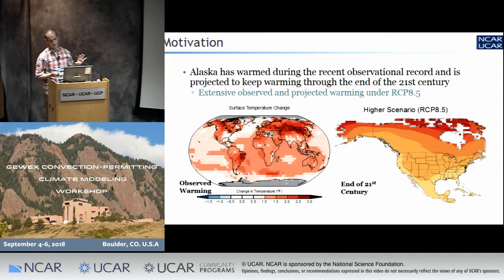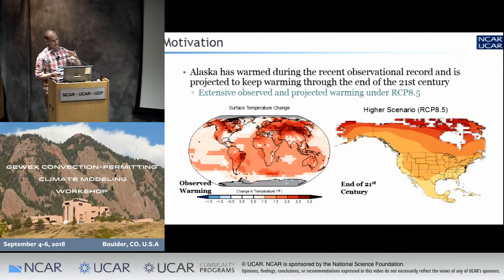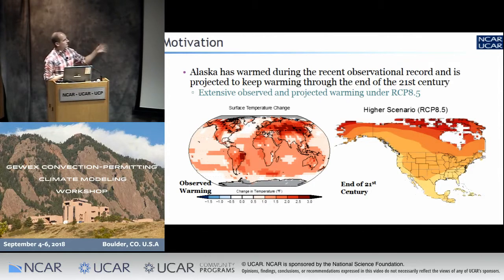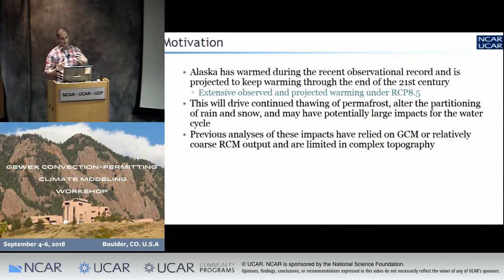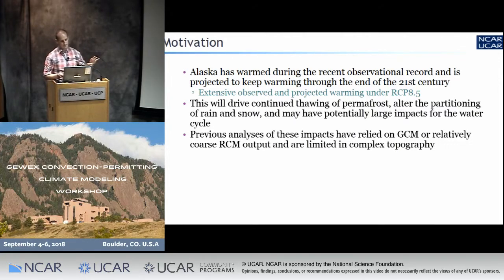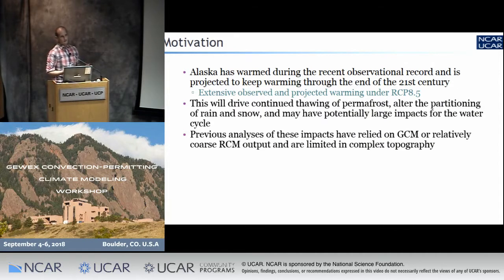Some quick motivation: this work is funded by the U.S. Army Corps of Engineers, so we are taking more of a water resources slant. Alaska and the Arctic in general have been subjected to a lot of warming and will see a lot more — on the order of 4 to 8 Fahrenheit depending on the climate model and projection. This warming is going to drive extensive changes in the water cycle: things like thawing permafrost, partitioning of rain and snow, which we've seen over the lower 48, are going to happen to a greater degree over the Arctic, with large impacts on water resource management and operating installations on permafrost.